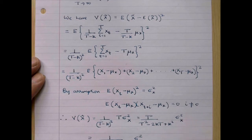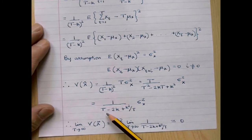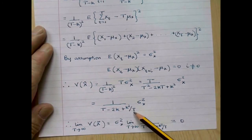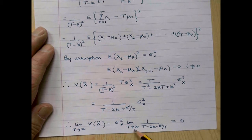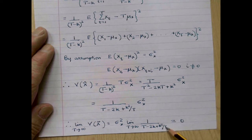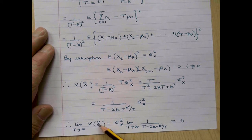Now, if we divide numerator and denominator by T, it becomes 1 over T minus 2k plus k squared over T, times sigma squared x. Therefore, if we take limits, the limit as T tends to infinity of this variance is sigma squared x multiplied by the limit of that expression. The limit as T tends to infinity of 1 over T minus 2k plus k squared over T will be 0: the k squared over T term goes to 0, 2k stays constant, but the T term becomes infinity, so the denominator becomes infinitely large. The expression as a whole goes to 0, and therefore the variance of x tilde goes to 0 as T tends to infinity.